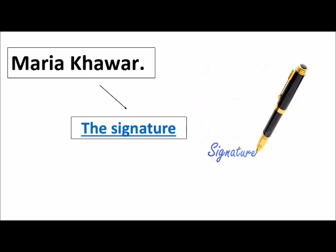In this part of the application, you write your full name. It comes after the closing, is written towards the left side, and always ends with a full stop. For example, I have written 'Maria Howard full stop.' This part of the application is called the signature.